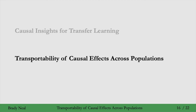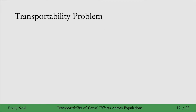That brings us to the section on transportability of causal effects across populations. So far in this course, we've only looked at identifying and estimating causal effects within one population. But say we know the causal effect in one population and we want to know if it's the same, or if we can somehow use that information to transfer or transport and get the causal effect in a different population.